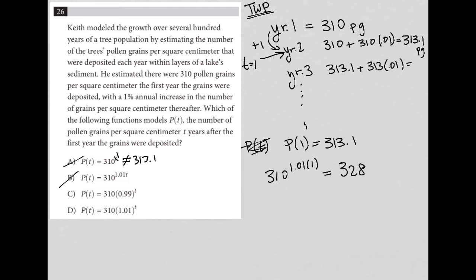How about 310, so answer choice C, 310 times 0.99 to the first power. So that would be 310 times 0.99. That's equal to 306, right? So that's also not correct for us.